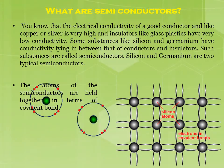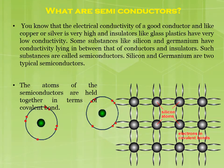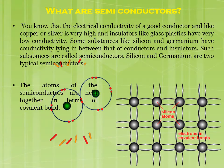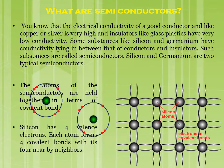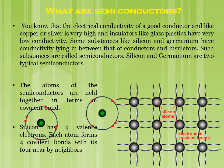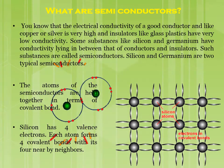The atoms of semiconductors are held together in terms of covalent bonds. Silicon has four valence electrons, and each atom forms four covalent bonds with its four nearby neighbors.